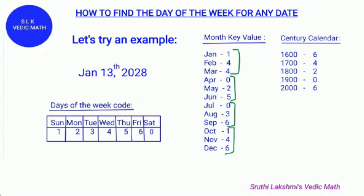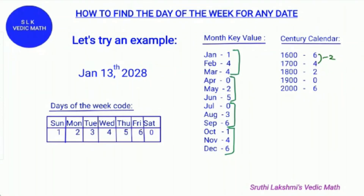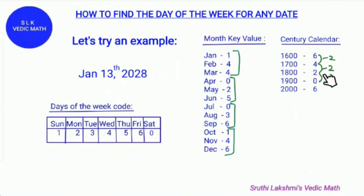As you notice, there is a pattern here. The 1600s code is 6, and 6 minus 2 gives the 1700s code which is 4. Then 4 minus 2 gives the 1800s code which is 2, and 2 minus 2 gives the 1900s code which is 0. You follow this pattern like this.